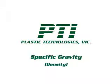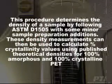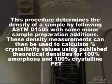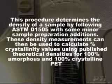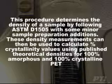Density. PTI uses a density gradient column to determine material density. This procedure determines the density of a sample by following ASTM D1505 with some minor sample preparation additions. These density measurements can then be used to calculate percent crystallinity values using published theoretical densities for 100% amorphous and 100% crystalline PET.